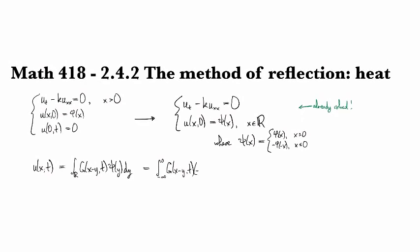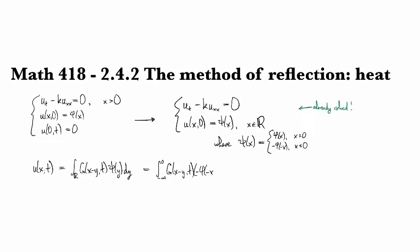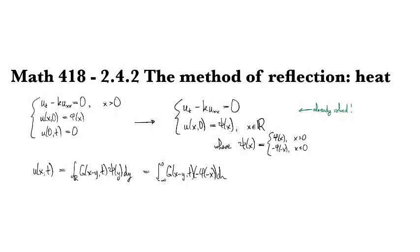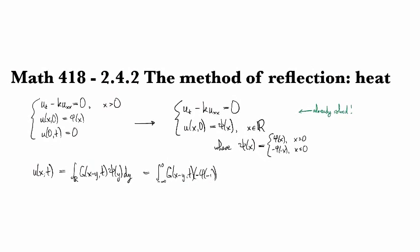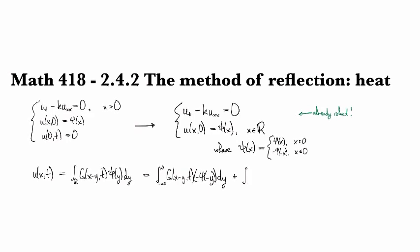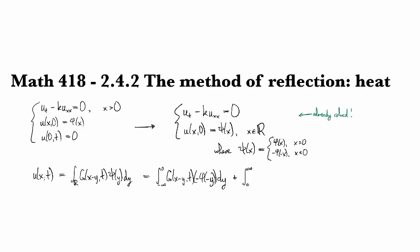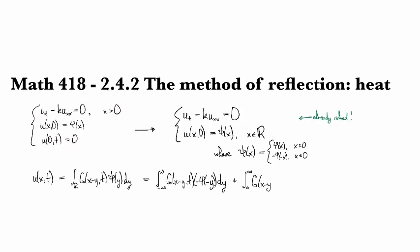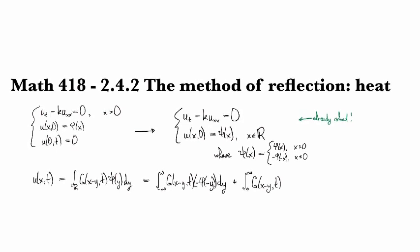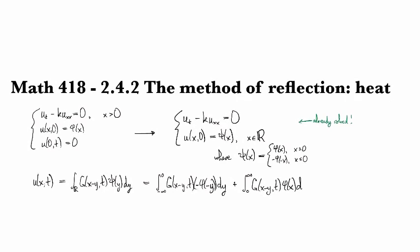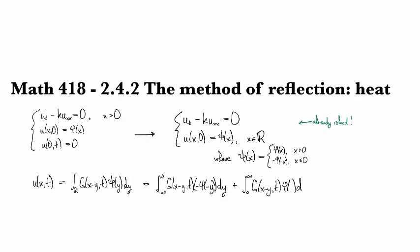So on this one, it's going to be negative. That should be a y. And then on the positive x-axis, it's just good old phi. And again, that should be a y.